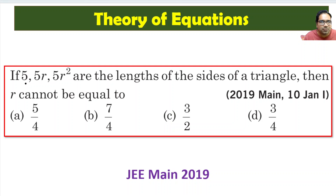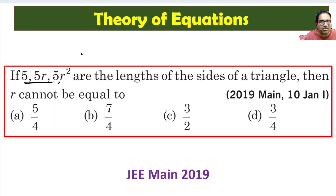So these three sides — 5, 5r, and 5r² — are in geometric progression. R is the common ratio. For example, if r equals 1, then all three sides are equal to 5, giving an equilateral triangle. So r = 1 is clearly possible.